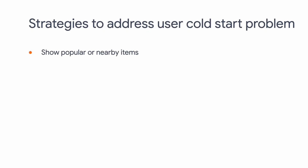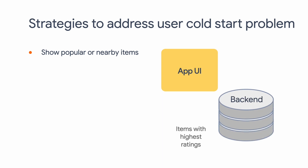The first approach is to simply recommend popular items, which tends to draw attention from any user, including the cold user. For example, if you visit YouTube for the first time, there will be a dedicated trending section. Another example: if you are building a hotel booking app, what you could do is to recommend the highest-rated hotels close to the user's geographic location.